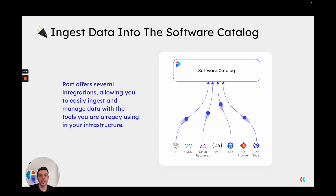Port makes it very easy to integrate with your existing infrastructure using tools such as Infrastructure as Code, CI/CD, Port's API, Port's Kubernetes Exporter, Port's Git applications, and so on. The idea is to make it as simple as possible to integrate Port and connect it to your existing backends and processes, so you can report entities from your software catalog in the most convenient way possible.